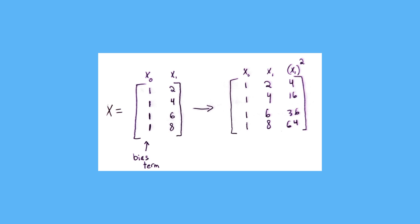So you'd find a theta for the bias term — theta zero, theta one, and theta two for the new column we added for degree two. Training the model is completely the same as linear regression. The only difference is that you have to pre-process your input dataset to have more columns depending on the degree of your polynomial.